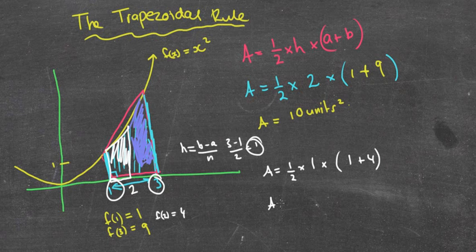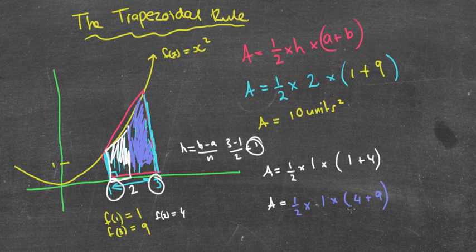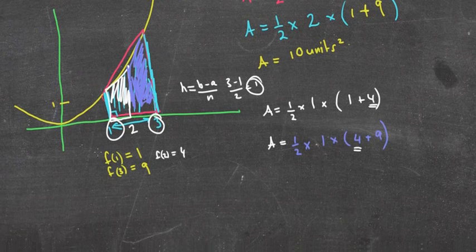If I now do the second trapezium, again I've got a half times the height which is still 1 times, this height we just calculated was that 4, and then the last height is the original second height we had there of 9. You can see here that we've actually counted 4 twice. And you probably think, well if I had to do like maybe 4 or 5 trapeziums, that's going to take a really long time to do it that way. So is there a shorter way? And of course the answer is yes, there is a rule.